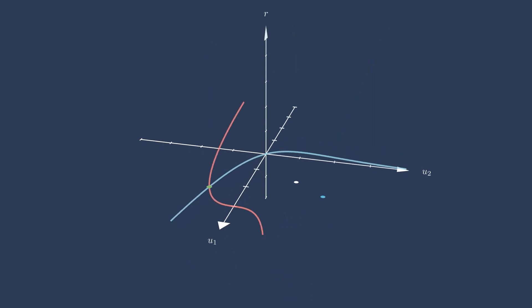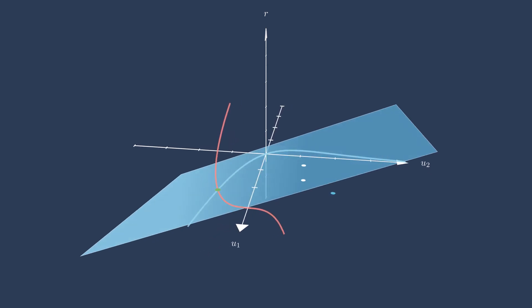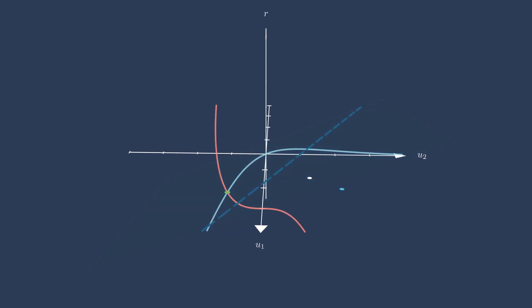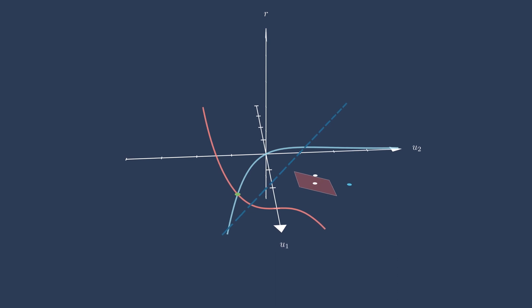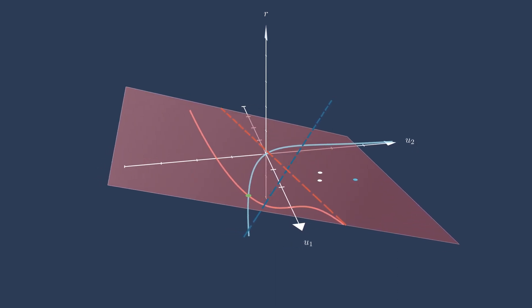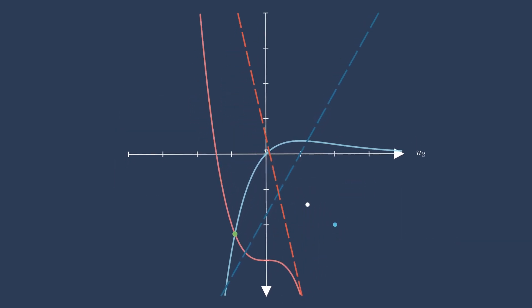That same process is repeated at the new guess for the u1 and u2 values. We build a tangent plane for the first residual and find the line where its residual value is zero. Same thing for the second residual. And then, like the first time, we update our guess to the u1 and u2 values where the two lines intersect.